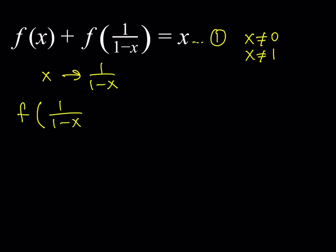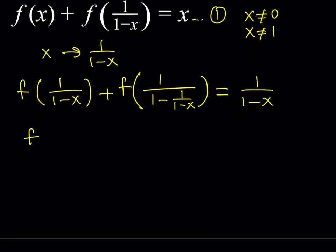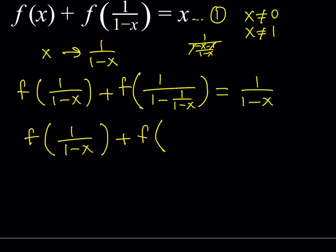So we get f(1/(1-x)) plus, now in this expression, if you replace x with 1/(1-x), we look at 1 over 1 minus 1/(1-x). That's a complex expression, so let's simplify it. Making a common denominator, you get 1 minus x minus 1 over 1-x — the 1s cancel, leaving negative x over 1-x. But we have the reciprocal of that term, so it flips.